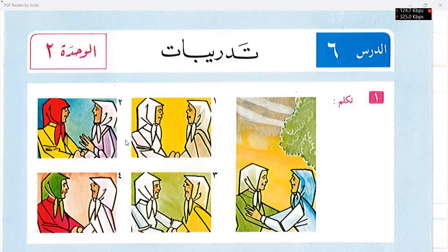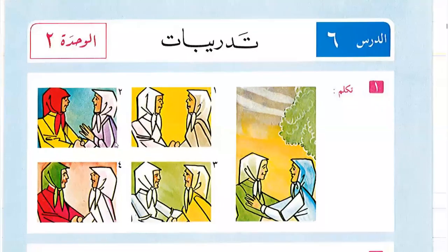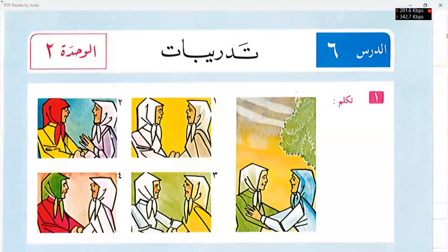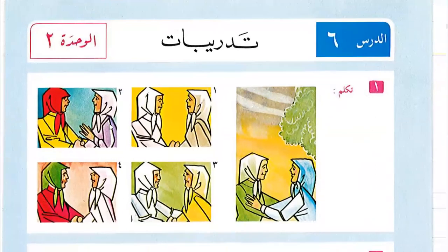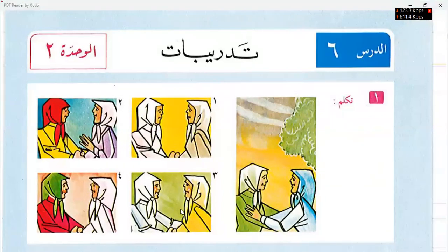Ibrahim says: Anna Fatima, I am Fatima. Now Basa will welcome Ibrahim saying: Welcome, Fatima — Ahlan wa sahlan Fatima.